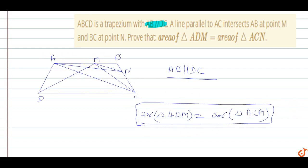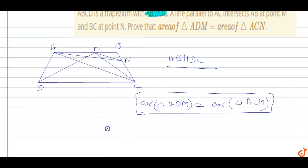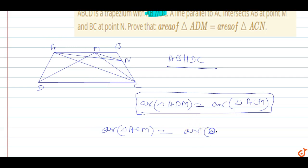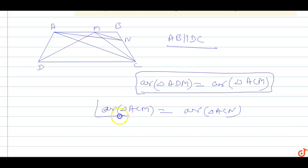Now for equation two: the area of triangle ACM is equal to the area of triangle ACN, because both triangles share the same base AC. So area of triangle ACM equals area of triangle ACN.